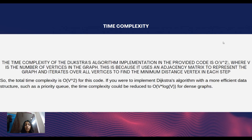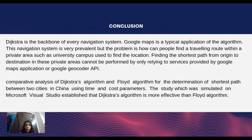The time complexity of Dijkstra's algorithm implementation in the provided code is O(V²), where V is the number of vertices in the graph. This is because it uses an adjacency matrix to represent the graph and iterates over all vertices to find the minimum distance vertex in each step. The outer loop runs for V iterations, the inner loop also runs for V iterations, and finding the minimum distance vertex takes O(V) time. If implemented with a data structure like a priority queue, the time complexity could be reduced for dense graphs.